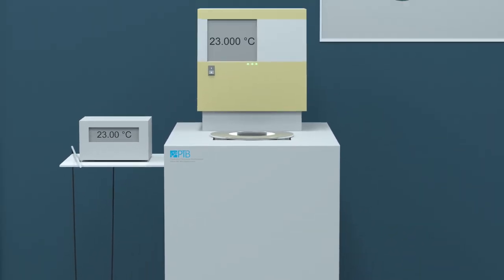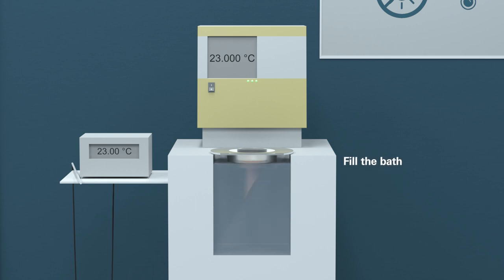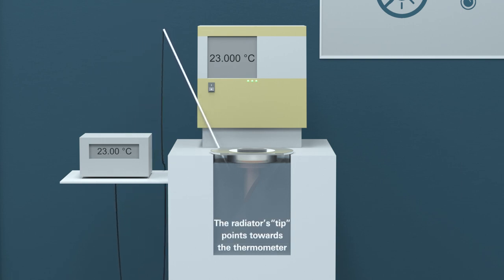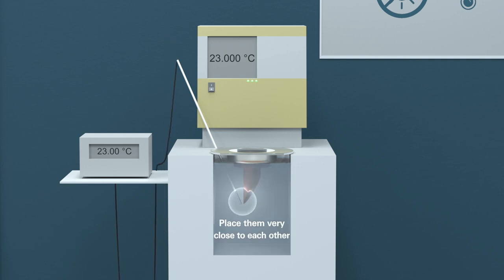To prepare the measurement, first fill the bath. Insert the reference thermometer and the cavity radiator into the bath such that the radiator's tip points towards the thermometer. Place them as close to each other as possible. Make sure that all metal parts of the cavity radiator are immersed in water.